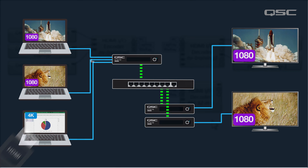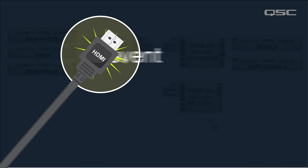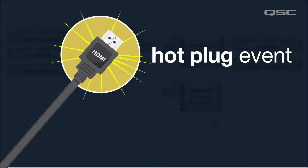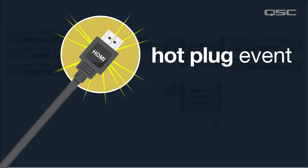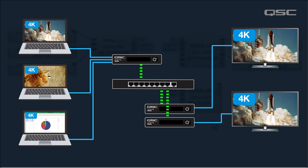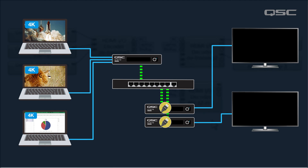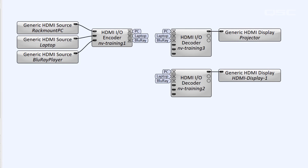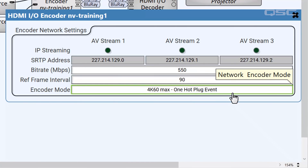When this happens, an event occurs that's known as a hot plug event, which essentially involves all the handshaking that happens when a source and a display are connected. If your first decoder is displaying a 4K signal when the second decoder requests a different stream, then both devices will experience a hot plug event while the encoder downshifts from 4K so that it can transmit both streams in 1080. If you open the encoder's control panel, you'll see a setting called 4K60, one hot plug event.